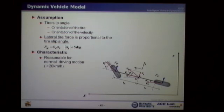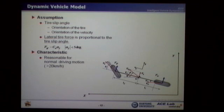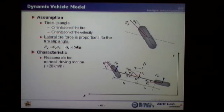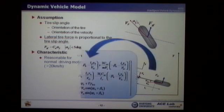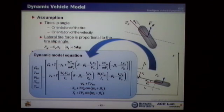This figure represents the free-body diagram of the dynamic vehicle model. As you can see, the dynamic vehicle model is also a 2-degrees-of-freedom bicycle model. However, in contrast to the kinematic vehicle model, this model assumes that the tire slip angle — the angle between the orientation of the tire and the orientation of velocity — is proportional to the lateral tire force. This characteristic is reasonable for normal driving conditions. From this dynamic relationship, we can derive the dynamic model equation.